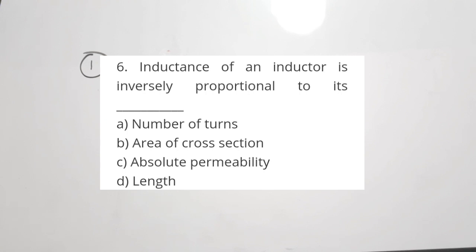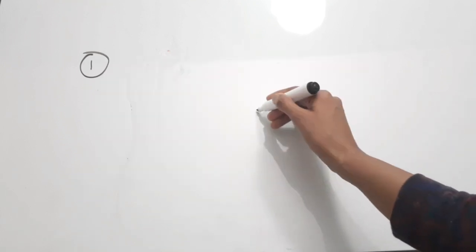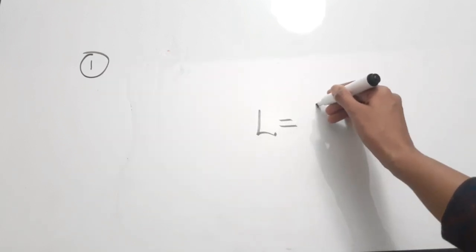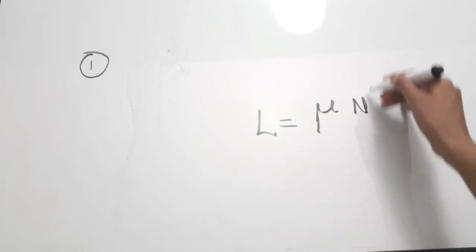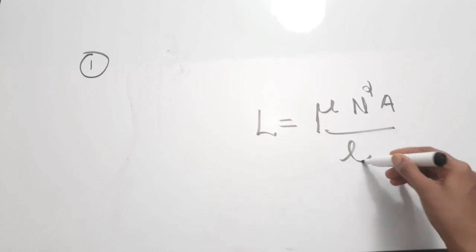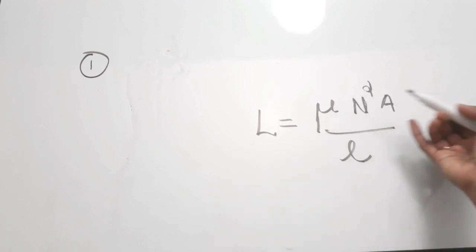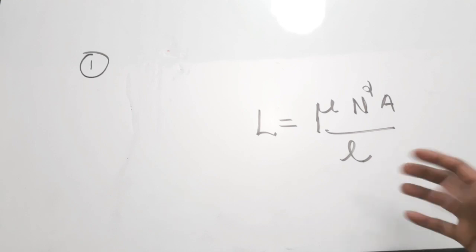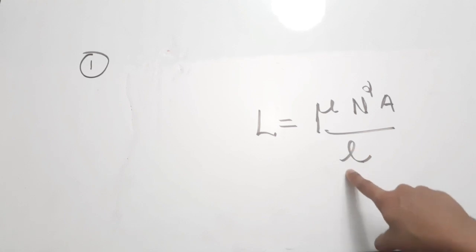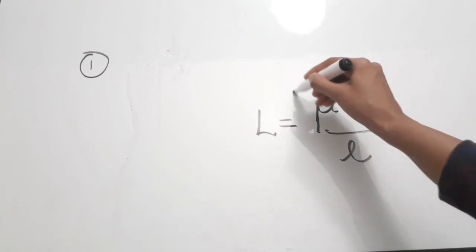Let's see the solutions of all 10 questions. The first question is: inductance of an inductor is inversely proportional to its dash. The equation for inductance is μ × N² × A / L. So it is directly proportional to permeability, number of turns, and area of cross-section, but inversely proportional to length. The correct answer is option D — length.